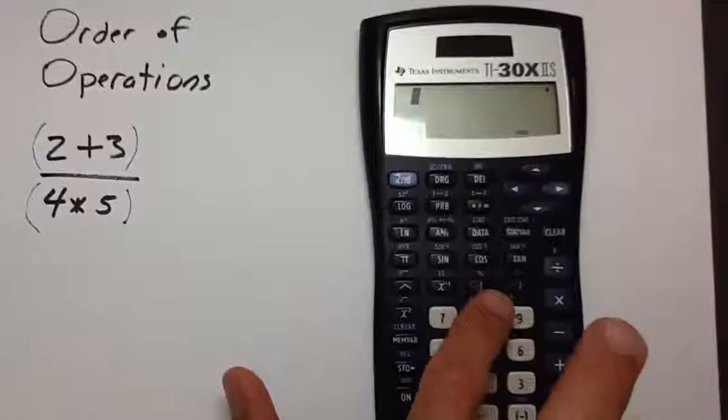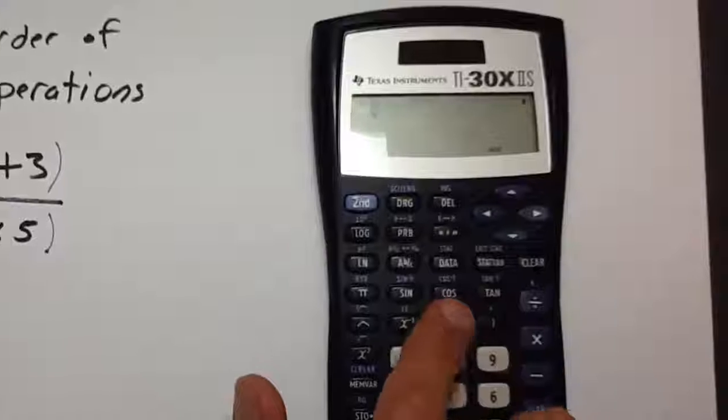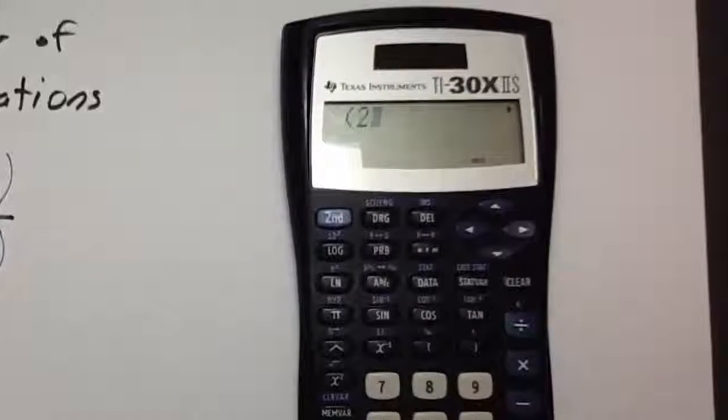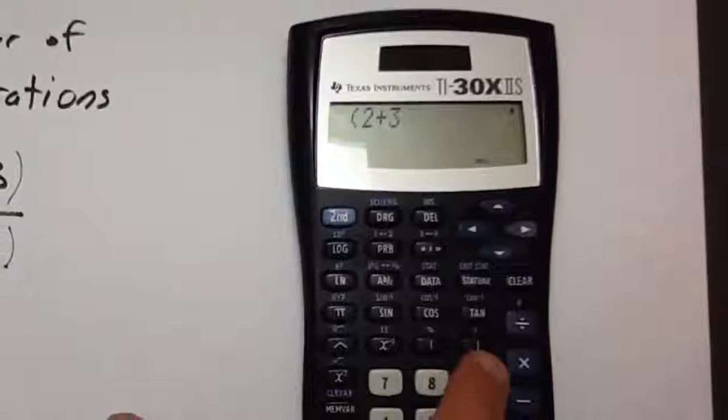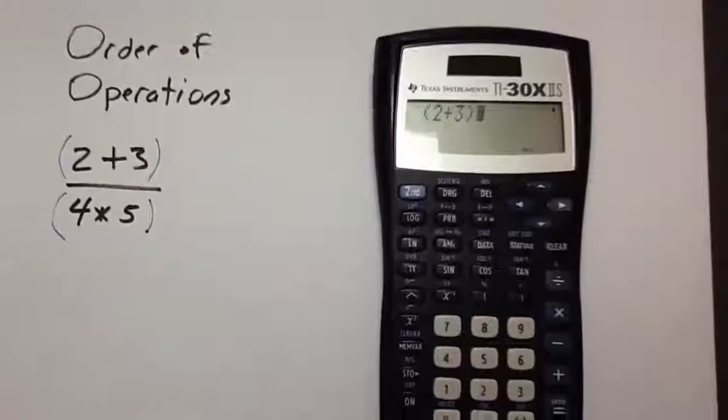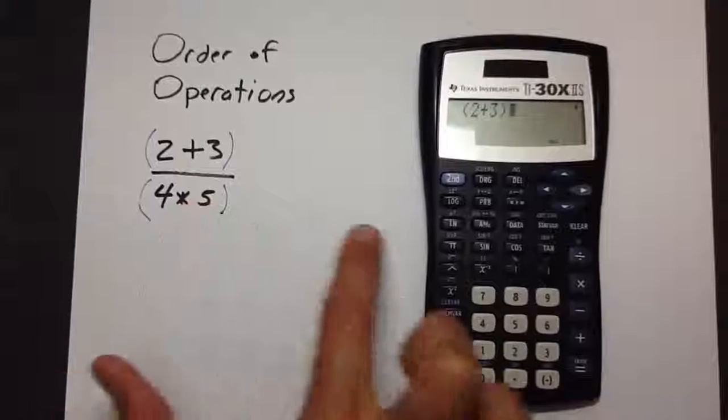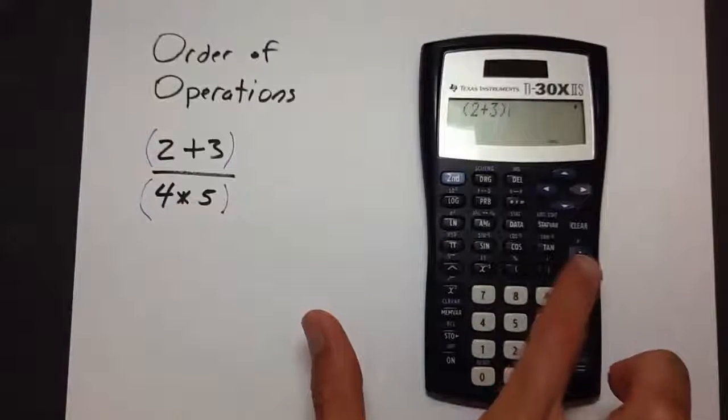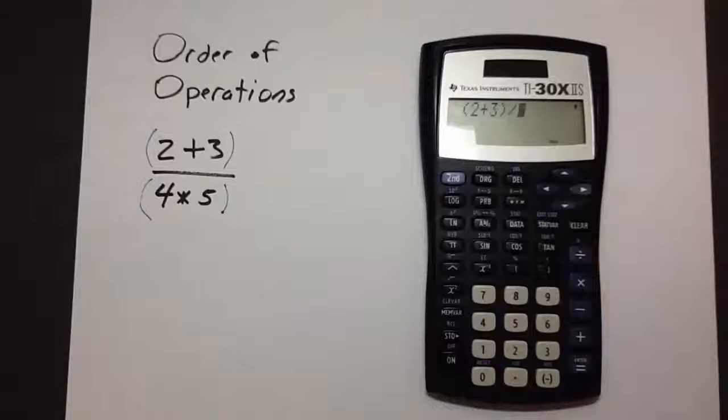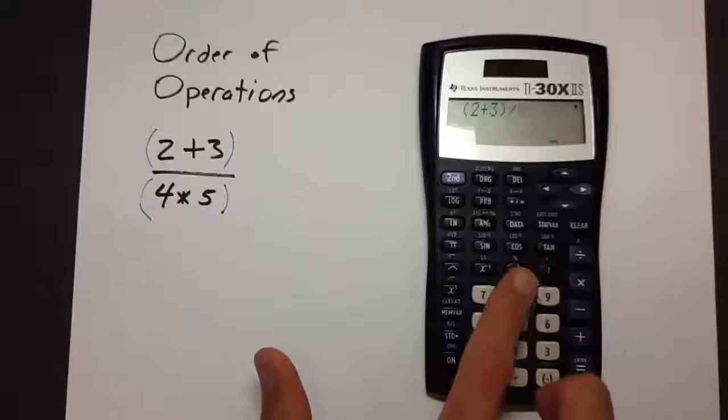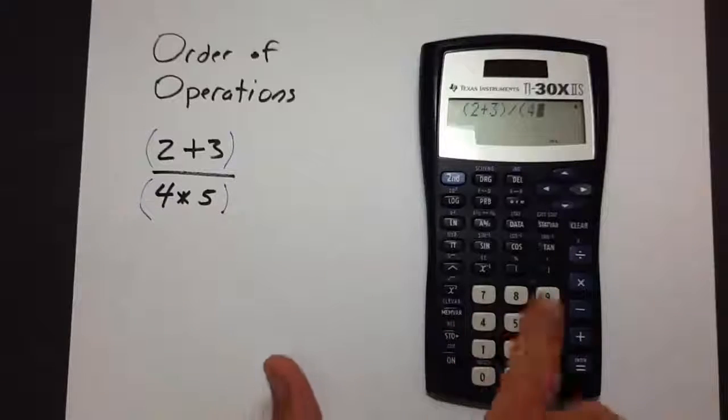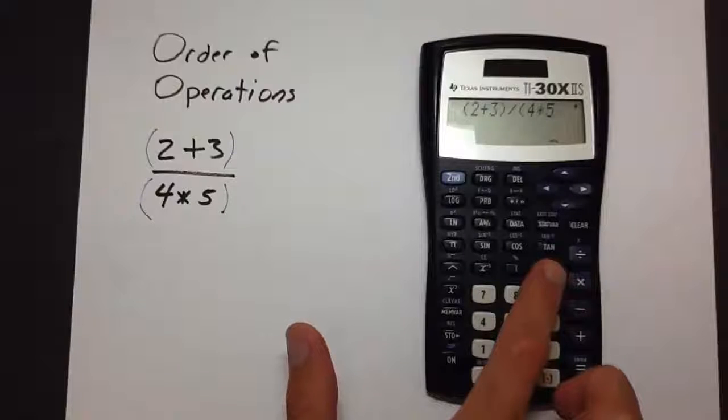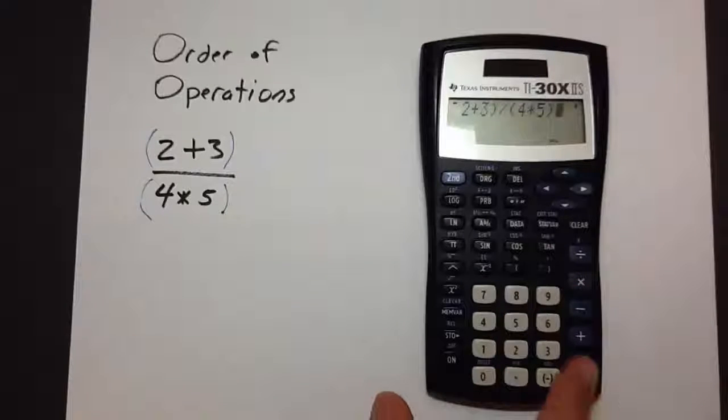So, I'm going to start by hitting the open parentheses button here above the numbers and say 2 plus 3. Then we have to close the parentheses using this other parentheses key. Then divide. For the division bar, we simply place a division sign next. The TI-30X2S will put a slash, but that'll work. Then we open the parentheses again, place the 4 times 5, so 4 times 5, close parentheses, and now we press enter.